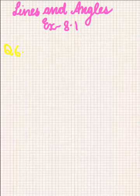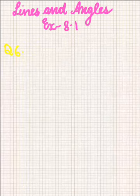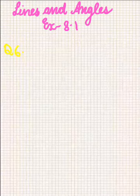Welcome back. We are on R.D. Sharma, Lines and Angles Chapter, Exercise 8.1, and we are going to do Question No. 6, which says that 2 supplementary angles differ by 48 degrees. Find the angles.